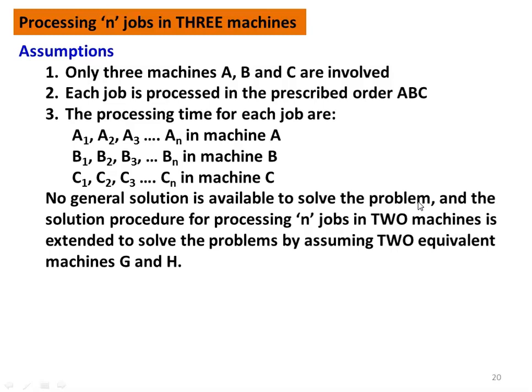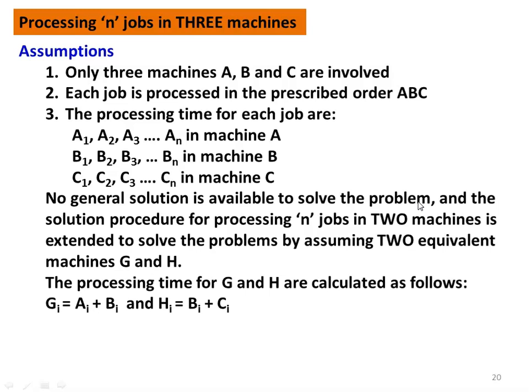The general solution for processing n jobs in three machines is not available. Johnson established the procedure for processing n jobs in two machines. The same thing is extended with a slight modification in the problem. We will solve n jobs in three machines with the extension of the problem-solving technique for processing n jobs in two machines. We have to convert the three-machines problem into a two-machine problem by assuming two equivalent machines, G and H.